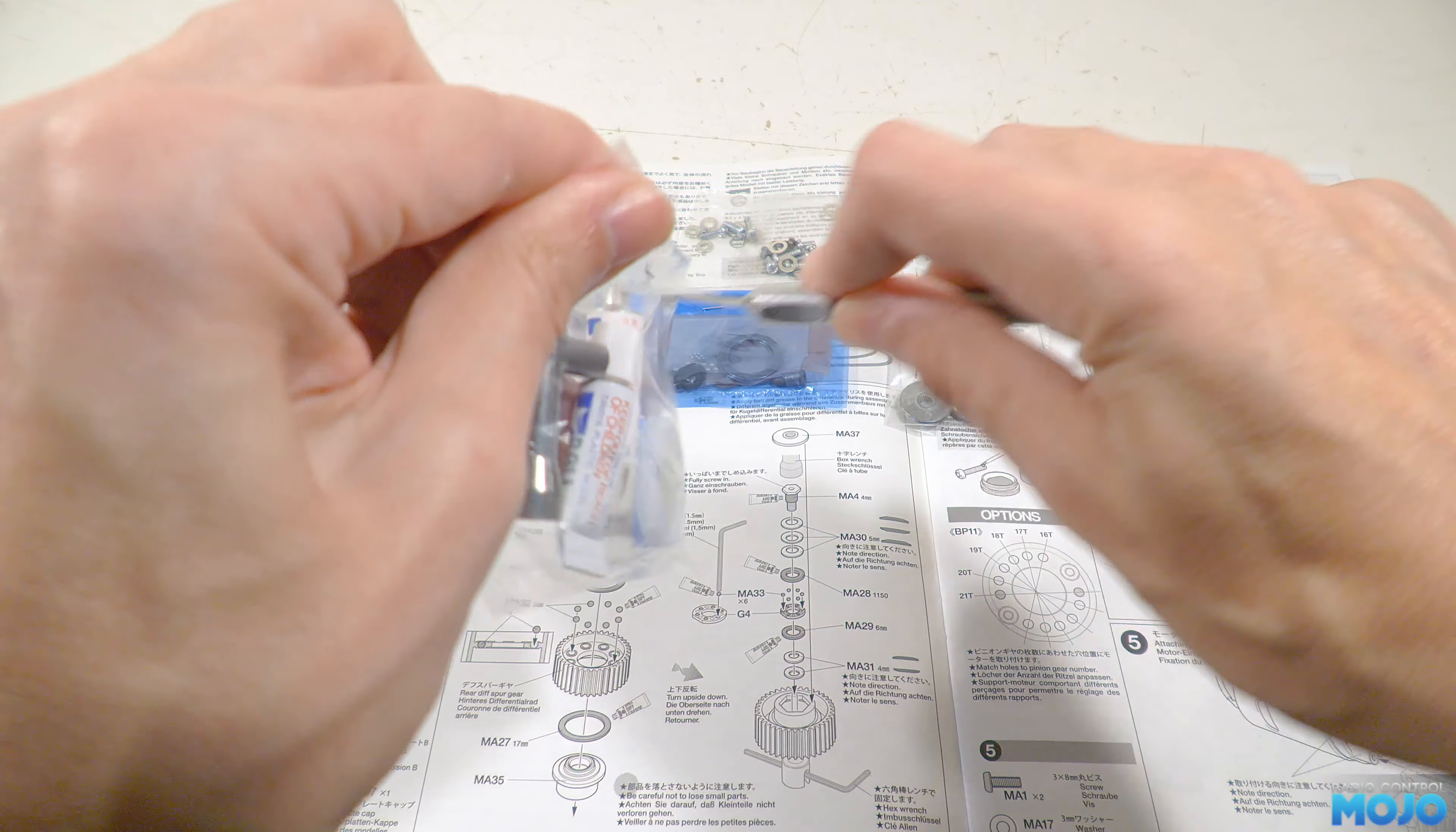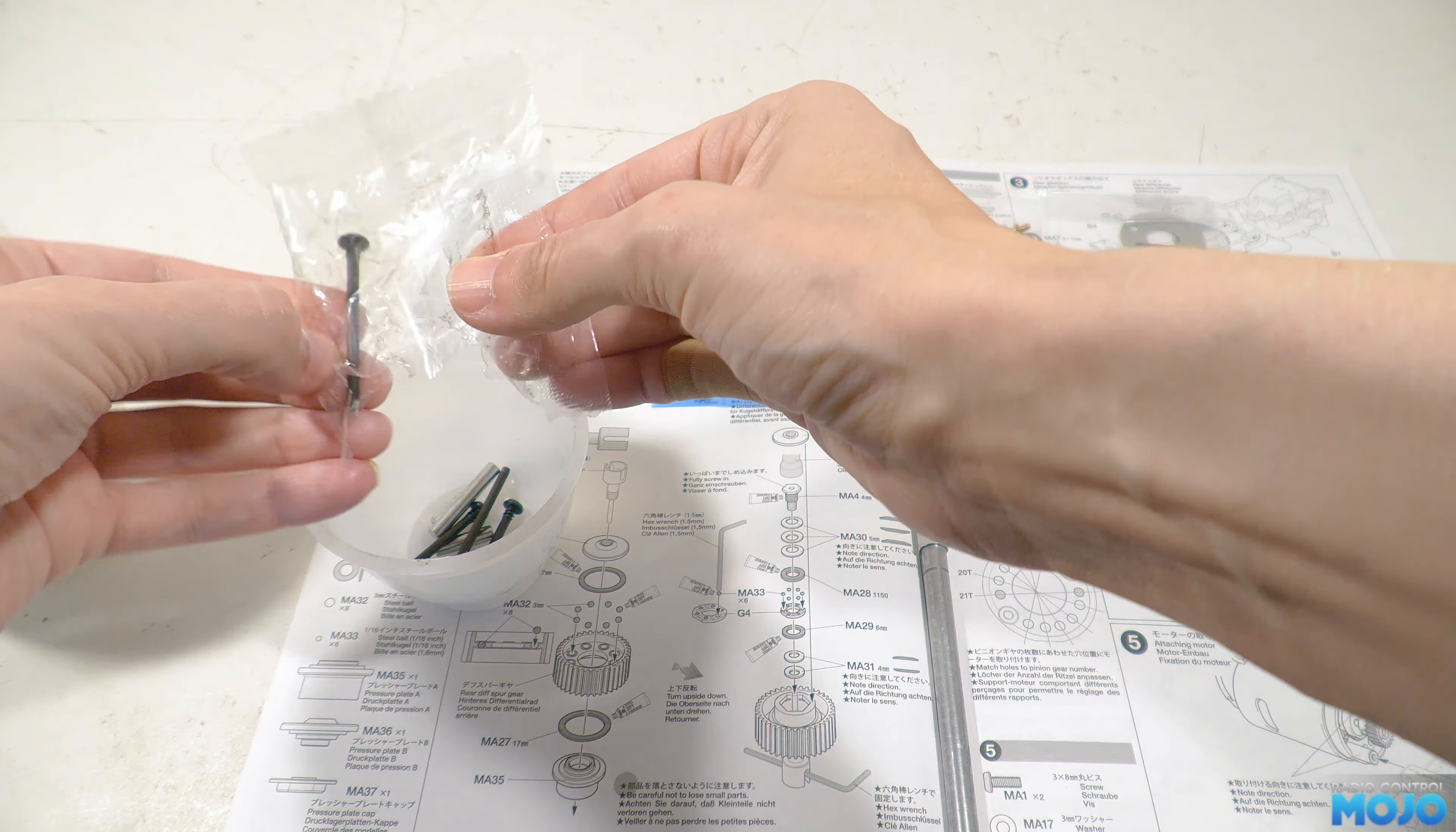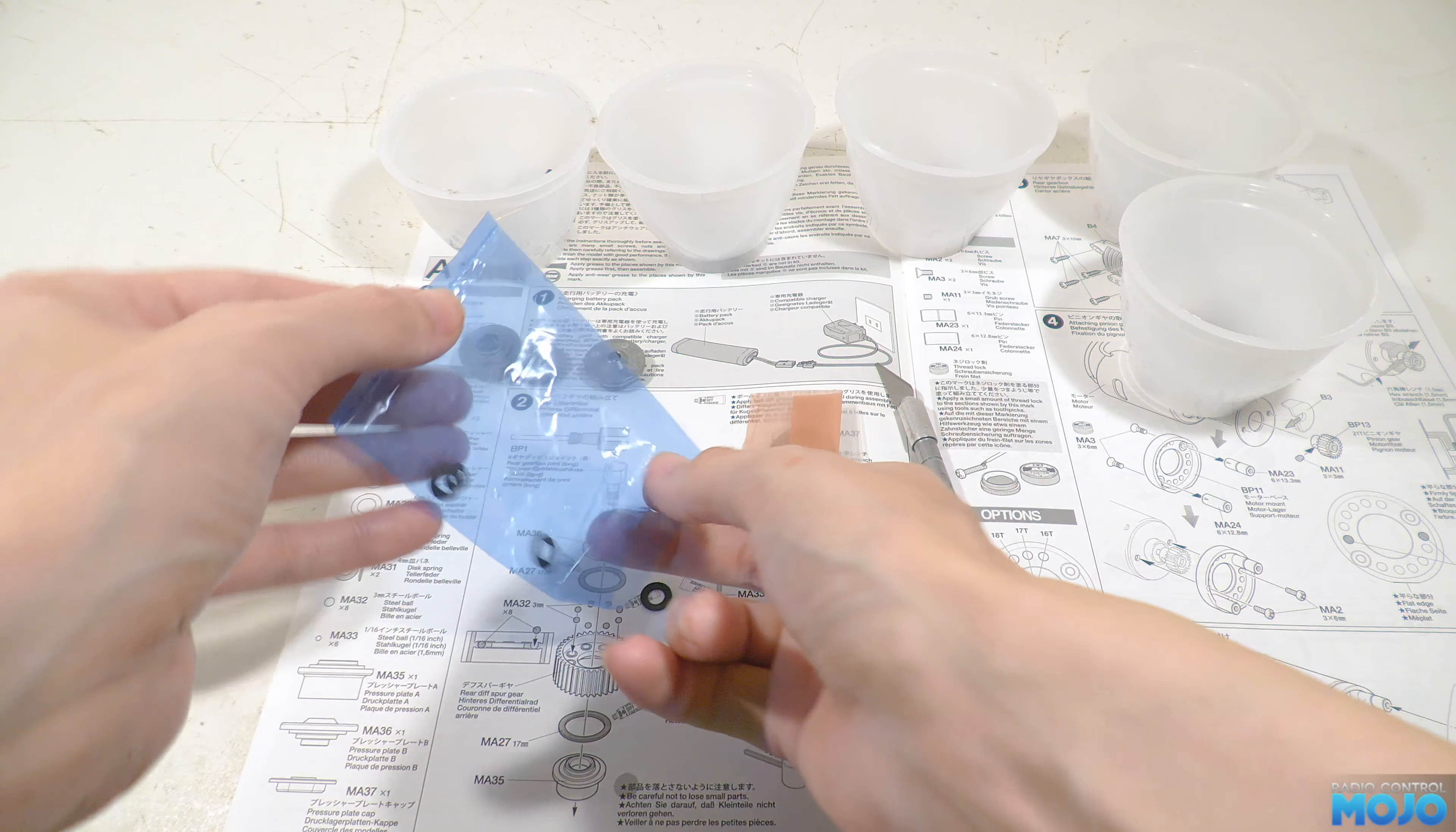As usual I'm going to pour all the parts from the bags into some pudding pots. It makes the parts far easier to find and keeps them fairly safe from rolling away. Some of the parts we'll need right away for the ball diff in step two, so we'll keep those ones out.